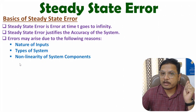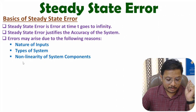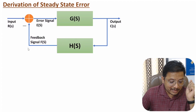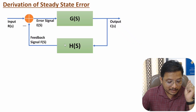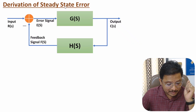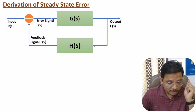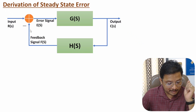So let us derive the equation of steady state error. Here we have a negative feedback system, and for this negative feedback system I will explain the calculation of steady state error. In this system we have a feedback signal and here we have an error signal. Since we have negative feedback, the error signal is the difference of the input and the feedback signal.